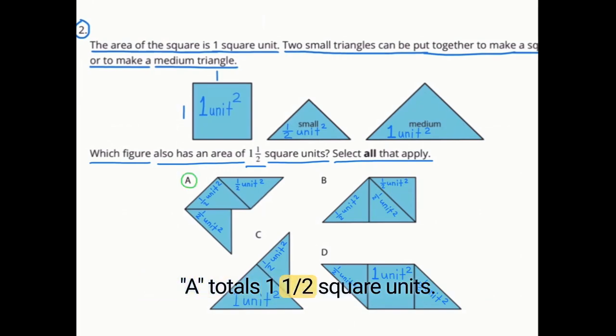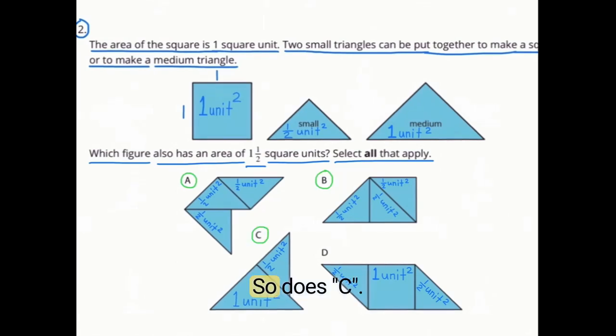A totals one and a half square units. So does B. So does C, but not D. D is a total of two square units.